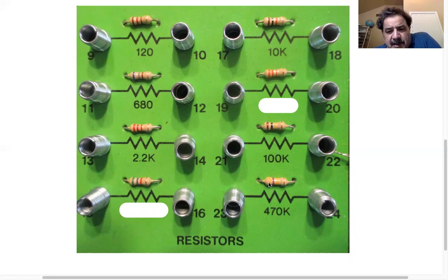And this is yellow, violet, yellow, so that's 4, 7 times 10,000, 47 times 10,000 is 470,000.